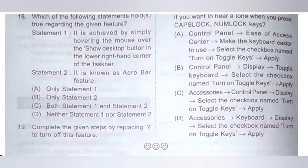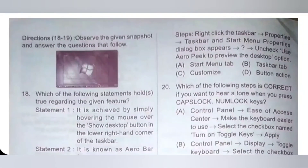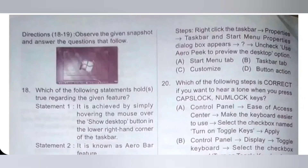Question 19: Complete the given steps by replacing the question mark to turn off this feature. Steps: Right click the taskbar, then select Properties. The Taskbar and Start Menu Properties dialog box appears. Then, question mark — Uncheck 'Use Aero peak to preview the desktop' option. Option A: Start menu tab. Option B: Taskbar tab. Option C: Customize the D button tab. The question mark should be replaced by option B, Taskbar tab. Option B is the correct answer.